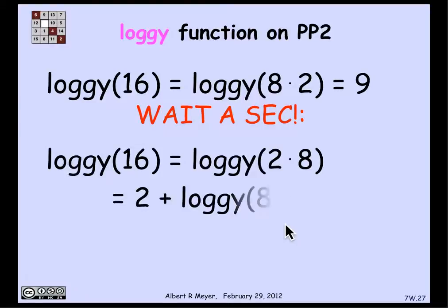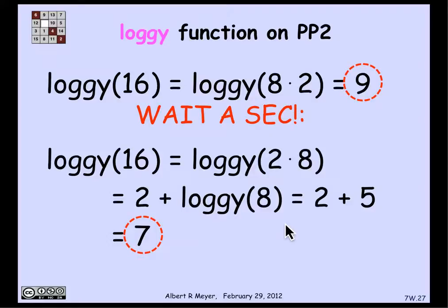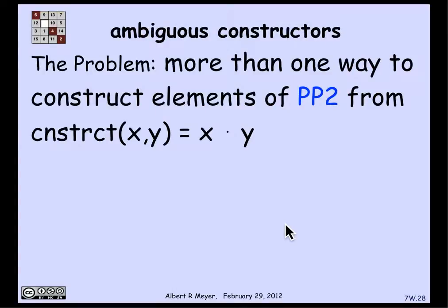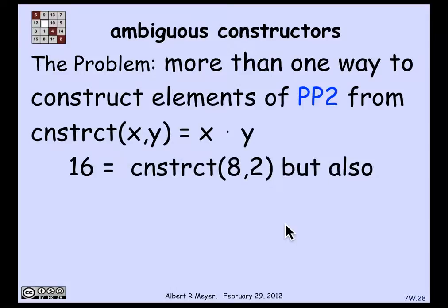But here comes the problem: 16 is not only 8×2, but also 2×8. So log_e(2×8) = 2 + log_e(8) = 2+5 = 7. Now there is an inconsistency — using the recursive definition of log_e, we concluded that log_e(16) is both 9 and 7. This is not a good definition of a function. The problem is ambiguity: there is more than one way to construct elements of the positive powers of 2 using the constructor x times y.